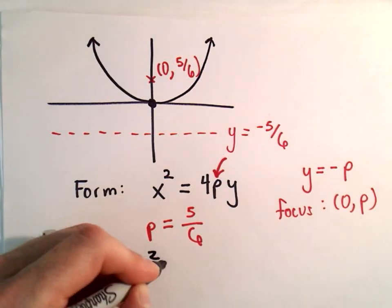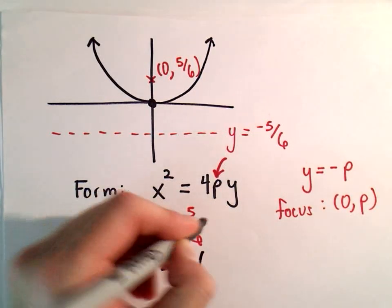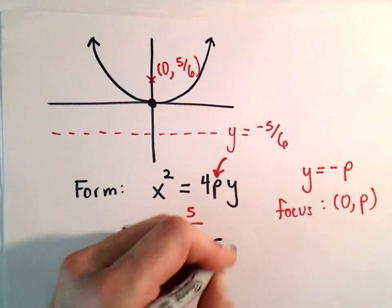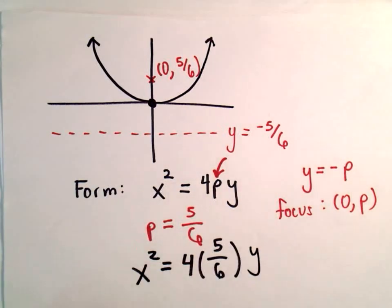And now it's just a little bit of arithmetic. So x squared equals 4 times, well, let's plug in 5 over 6 for our p-value, times y.